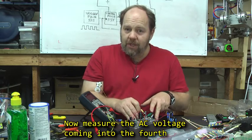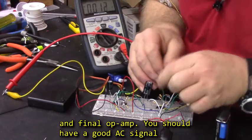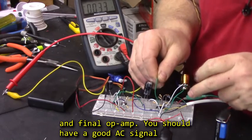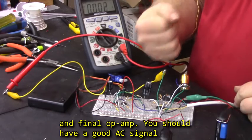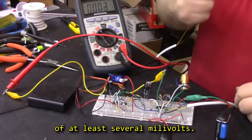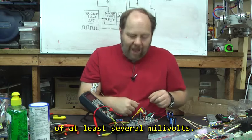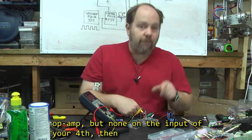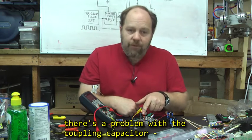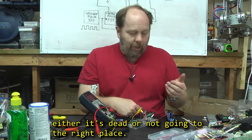Now measure the AC voltage coming into the fourth op-amp. You should have a good AC signal of at least several millivolts. If you have signal on the output of your third op-amp, but none on the input of your fourth, then there's a problem with the coupling capacitor. Either it's dead or not going to the right place.